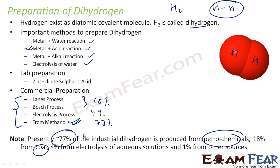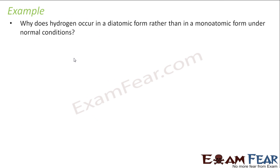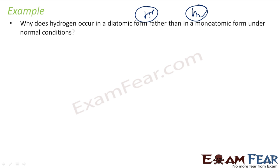We will discuss all these processes in detail. But first, let's take an example question: why does hydrogen exist as a diatomic molecule rather than a monoatomic one? In other words, why does hydrogen not exist as H, and why does it always exist as H₂ under normal conditions?